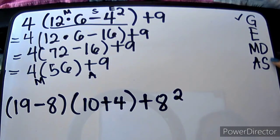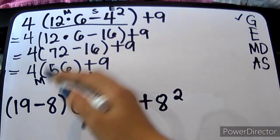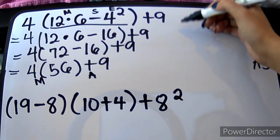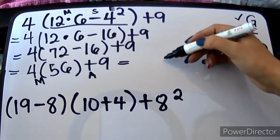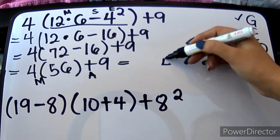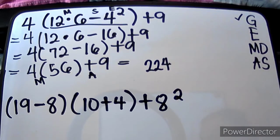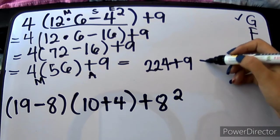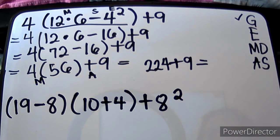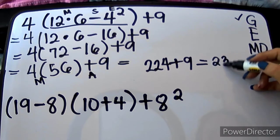And now we're done with letter G — wala na tayong letter E. Ang meron tayong operation is multiplication and addition. Tingnan nyo nga — ano bang mauuna? Yung M ba? Yung A? So, M muna. Let's multiply 56 times 4. 6 times 4 will give us 24, that's 224. And then plus 9. Since we only have one operation which is A or addition, we will have 233.